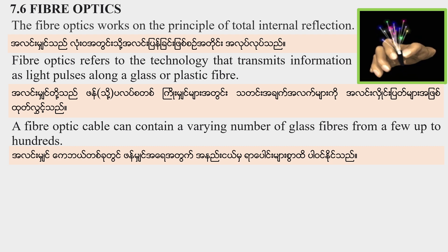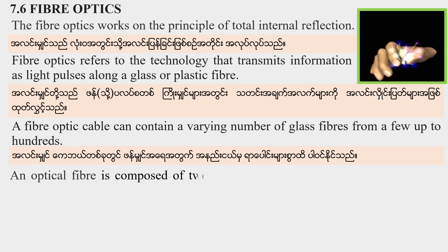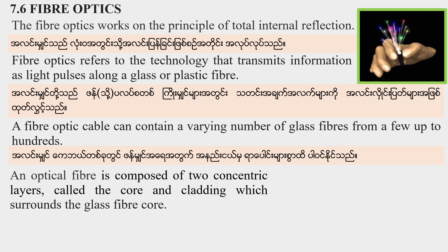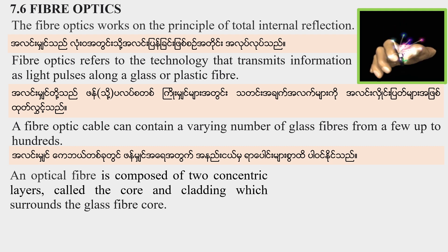An optical fiber is composed of two concentric layers. These are called the core and the cladding. This is surrounded by glass fiber.